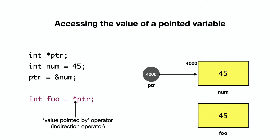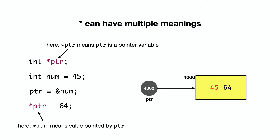The asterisk operator is called the indirection operator, also known as the 'value pointed by' operator. For example, if I write int foo equals to asterisk ptr, then foo is an integer variable whose value will be the value of the variable that ptr is pointing to. Note that asterisk has two meanings: when declaring a pointer, asterisk means 'this is a pointer'; when used later, asterisk ptr means 'the value pointed to by ptr'.